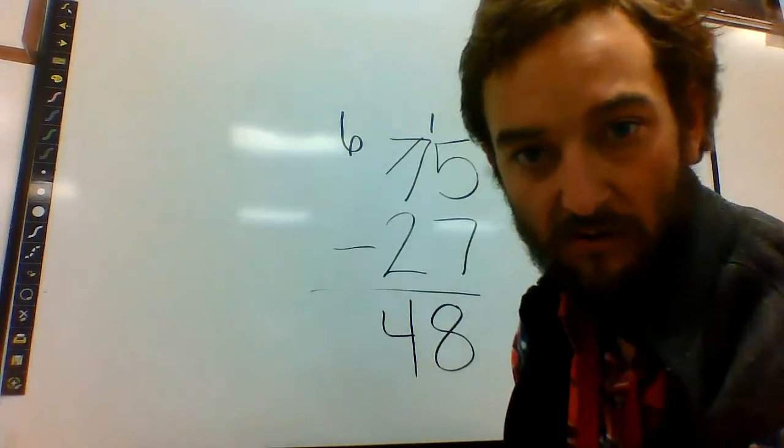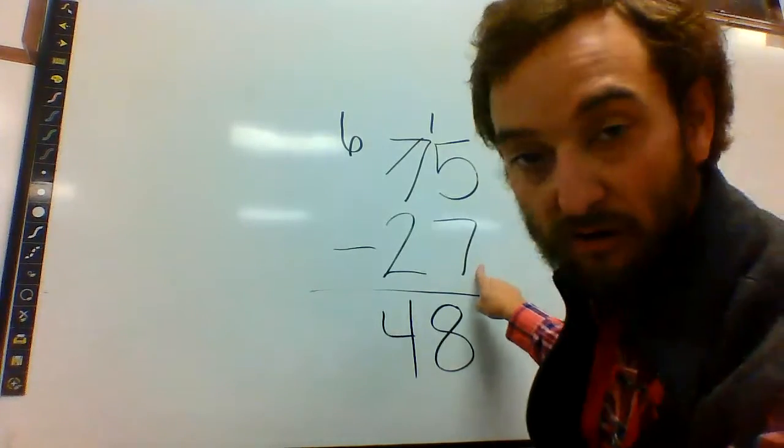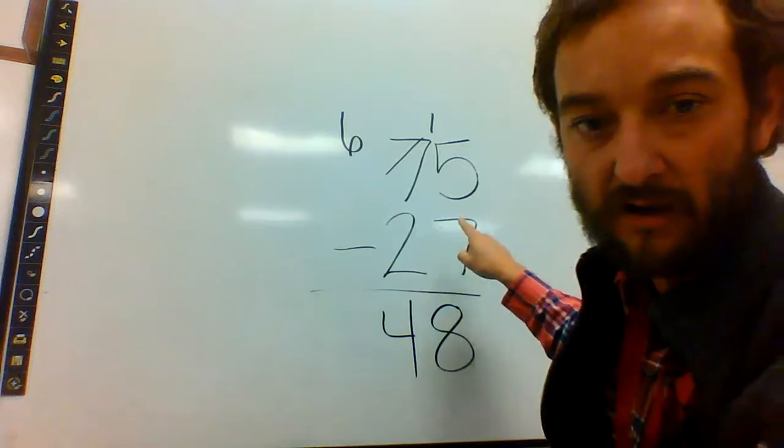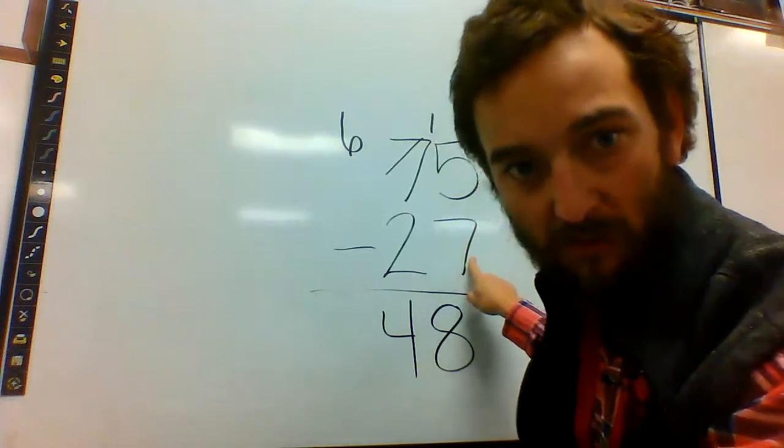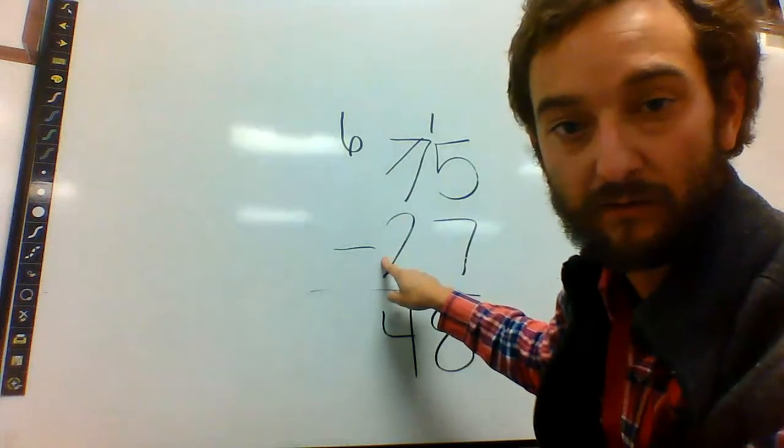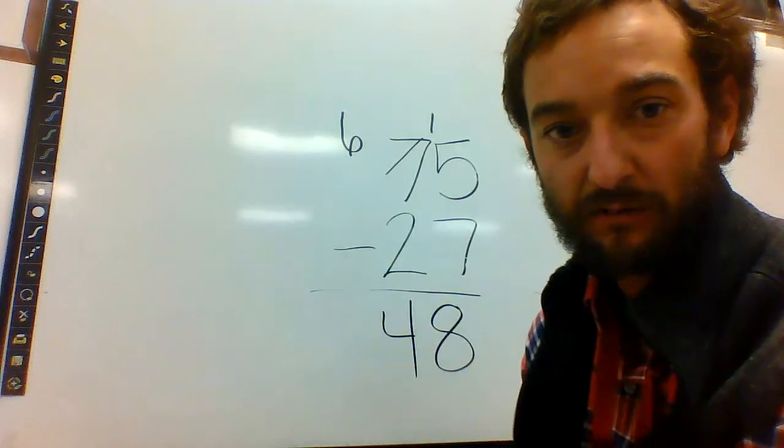You have to borrow. If this bottom is smaller, borrow. If not, then you can subtract normally. But if it is smaller, borrow. Then you do the 6 minus the 2. Be sure you're borrowing.